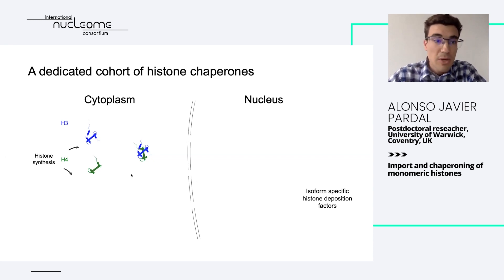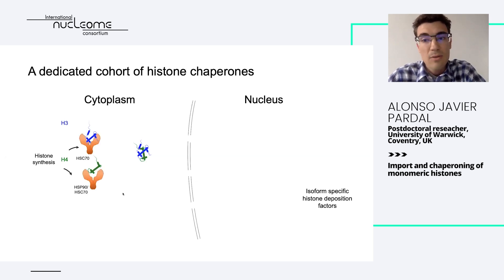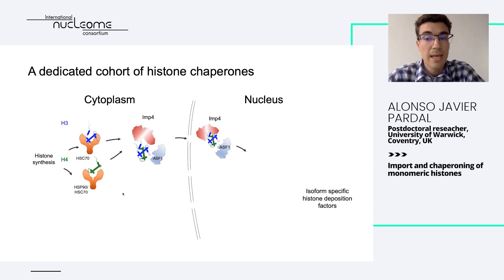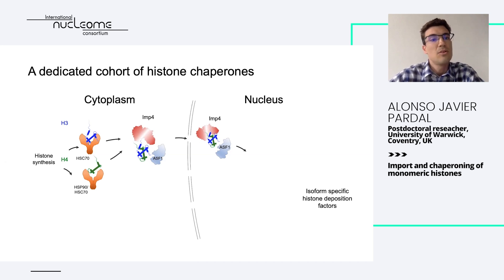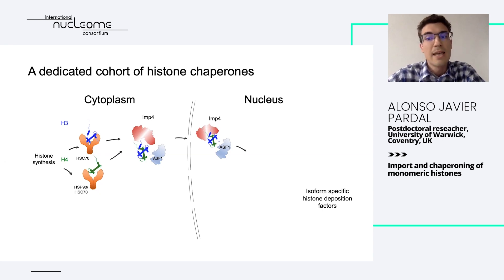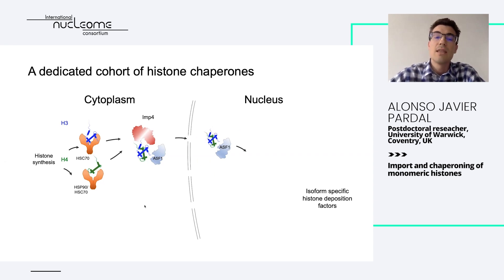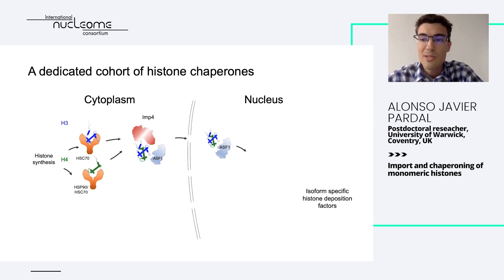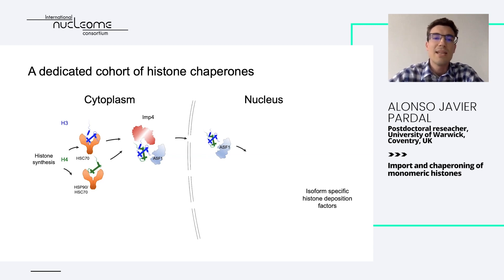In order to overcome this and to help histones undergo dimerization and nucleosome formation, there is a cohort of protein binding partners known as histone chaperones. Through intense years of research, the following picture has emerged: histones are synthesized in the cytoplasm at ribosomes like any other protein, folded by heat shock proteins, and quickly translocated into the nucleus by karyopherin proteins known as importins. In the case of histone H3 and H4, importin-4 is of noted interest.